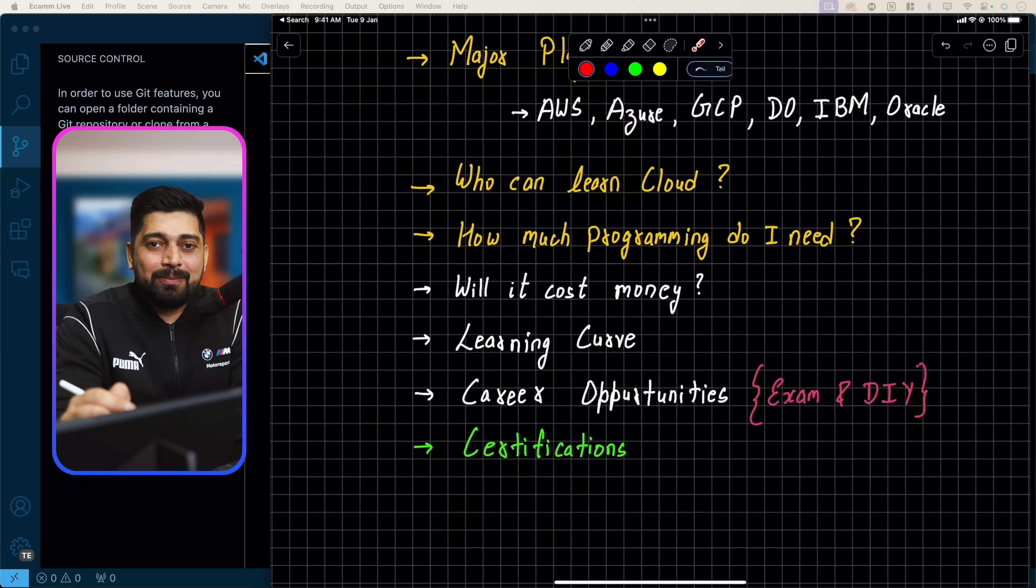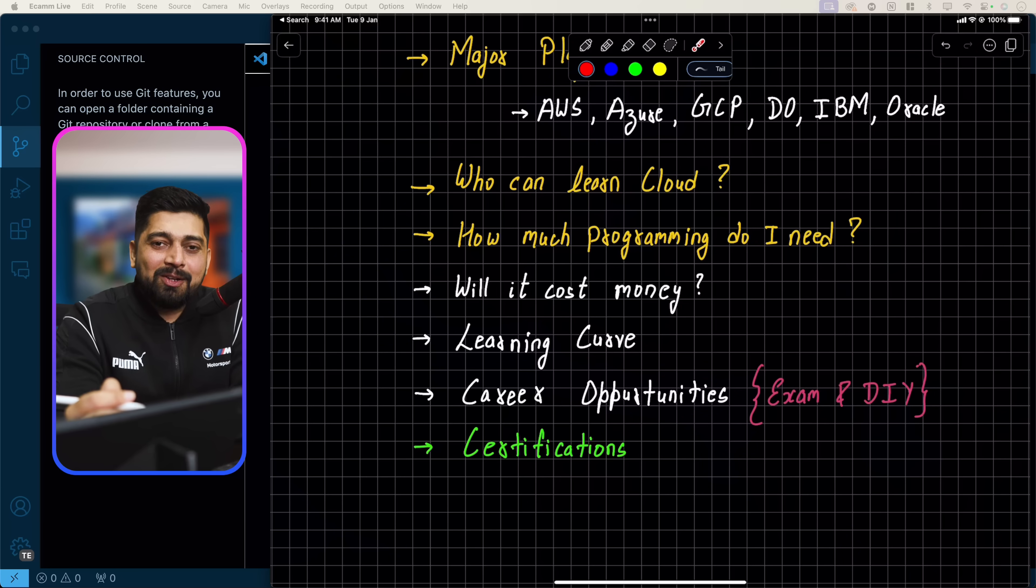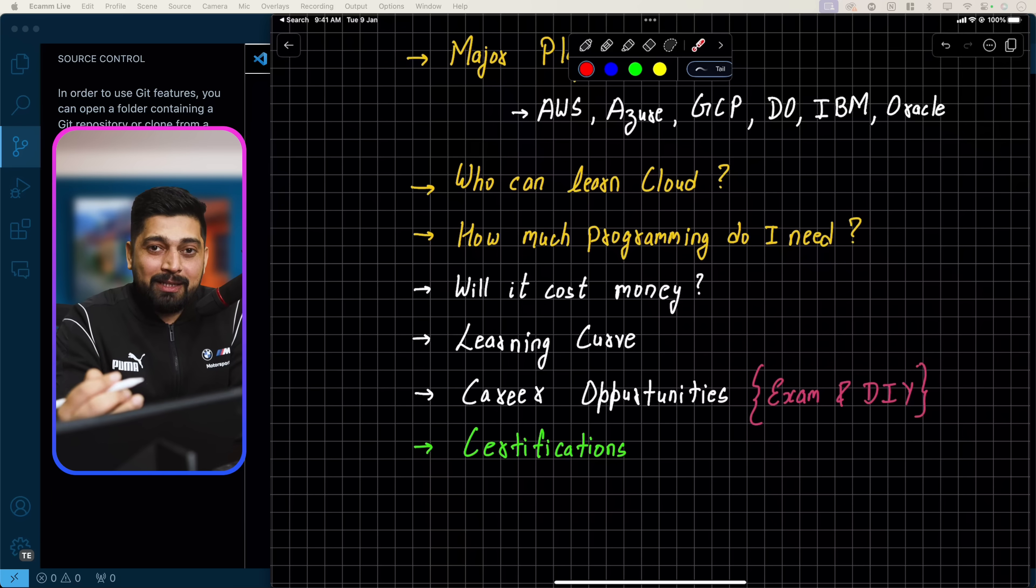And I always say that you always learn to swim where the water is deep. So make sure that you create an account on AWS or Azure or GCP and try it. It might cost you 100 rupees or 1,000 rupees for some services that you tried and ran a few servers on. That is good because ultimately the job that you are looking for is in production, not in any toy environment, and production does cost money.